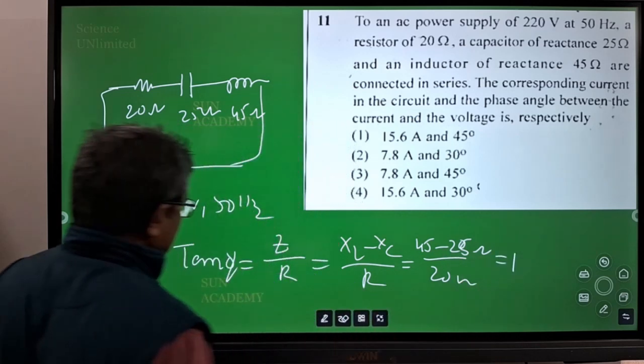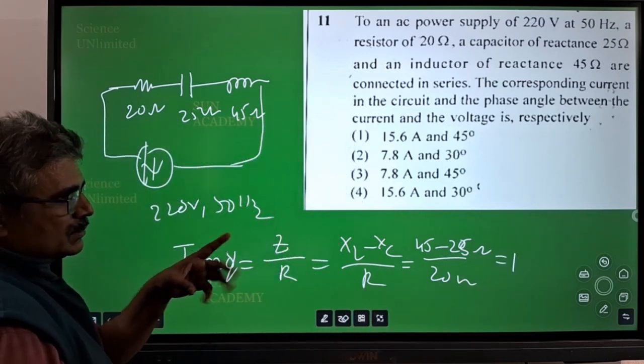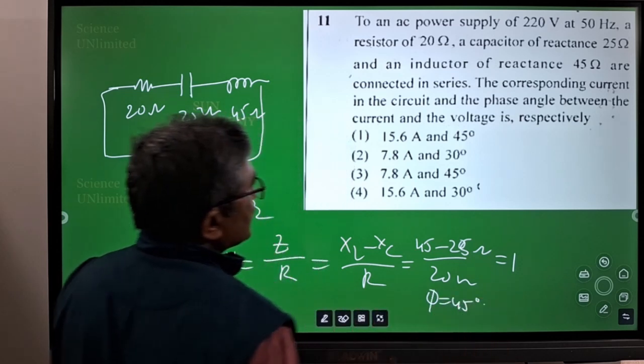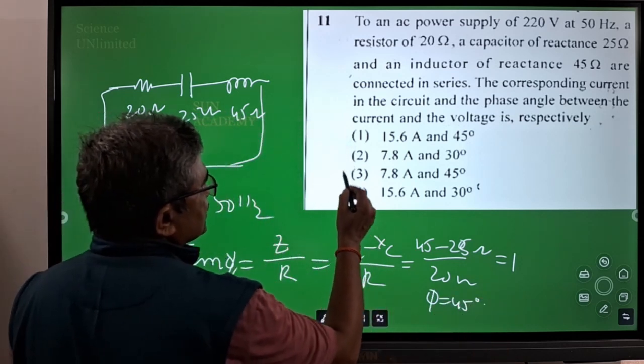So 20 ohms by 20 ohms, you will get 1. So tan φ, you will get 1, that means φ is 45 degrees. Phase angle is 45 degrees, that means either option 3 or 1.